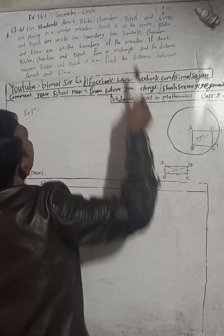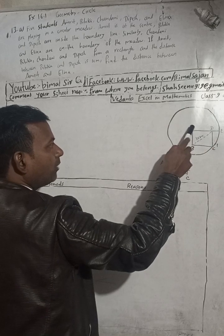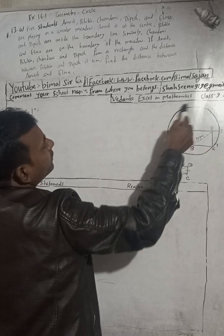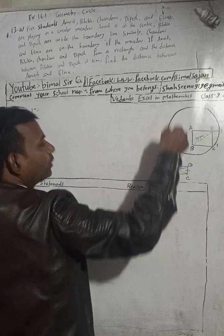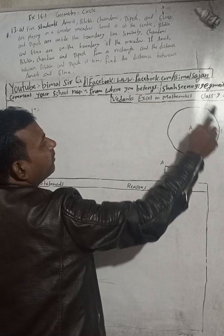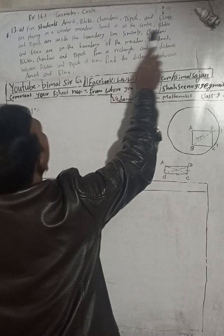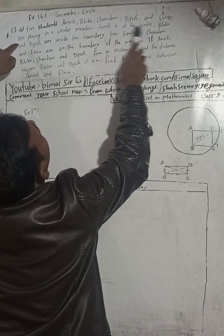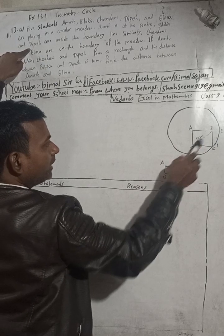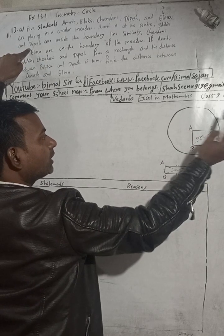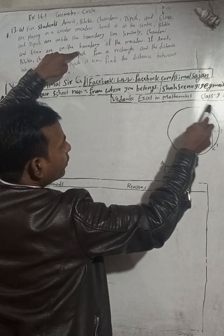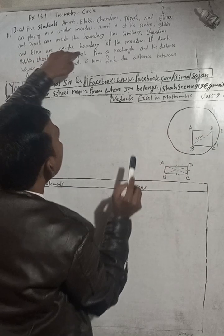This is a circular meadow and five students — Amrit, Vivica, Chandni, Dipesh and Elina — are playing in the circular meadow. They are not outside this boundary line. They are either on the boundary or inside the boundary. Amrit is at the center. Chandni and Elina are on the boundary of the meadow.